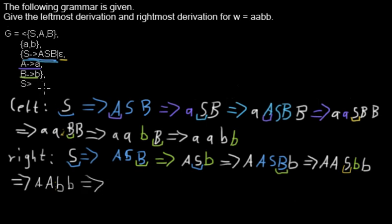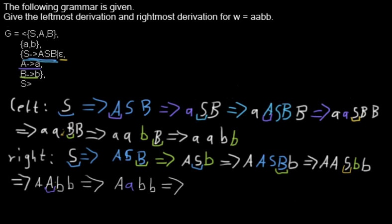I'm still doing rightmost derivation, so I will now proceed with this a. I'm keeping the a that was already before it, I replace this non-terminal a by the terminal a because I applied that rule, and I keep the b's that were left from before. Then in the last step, I replace the remaining a by the terminal a, and keep the b's that were left from before.